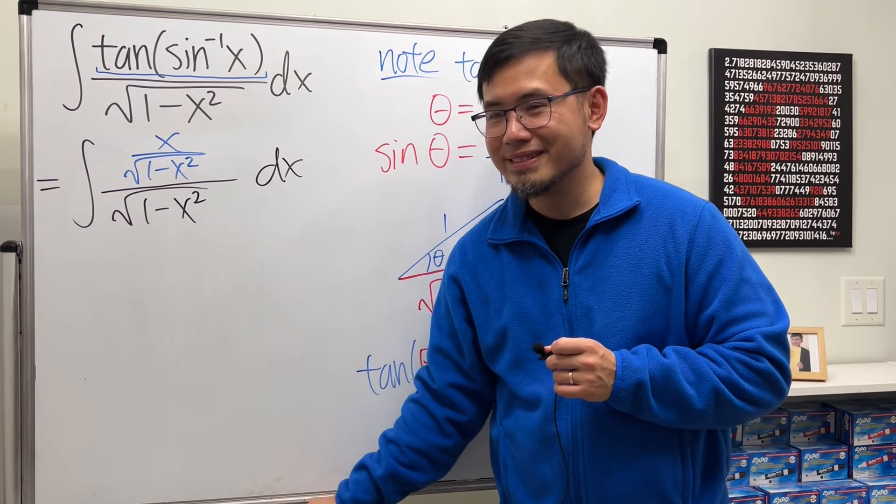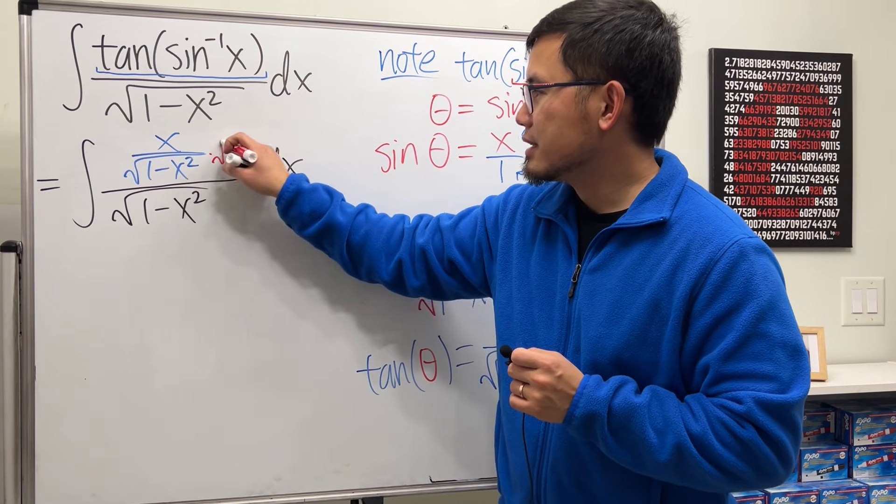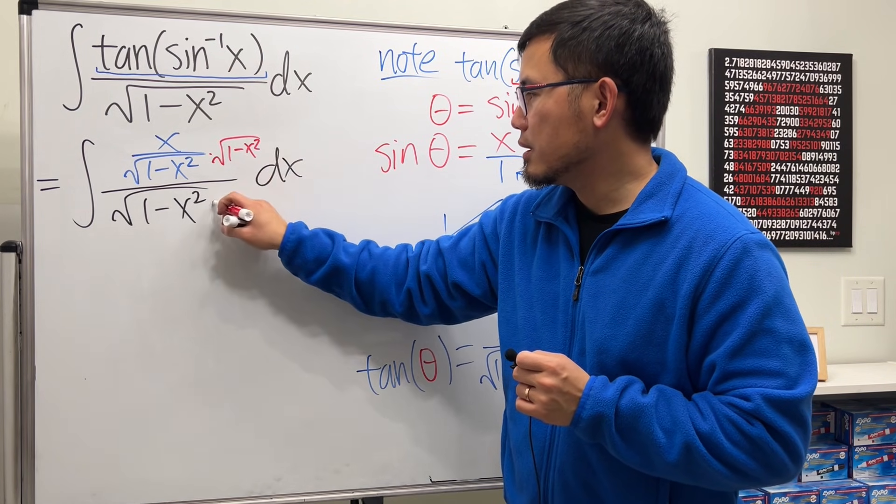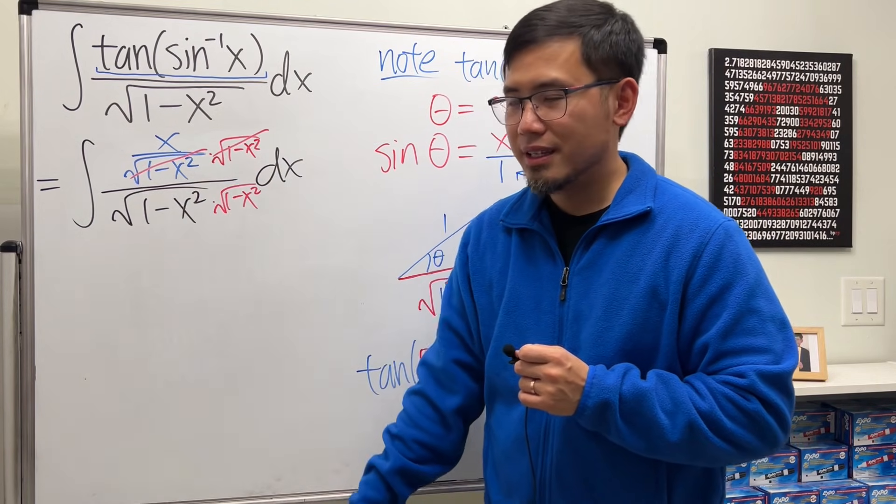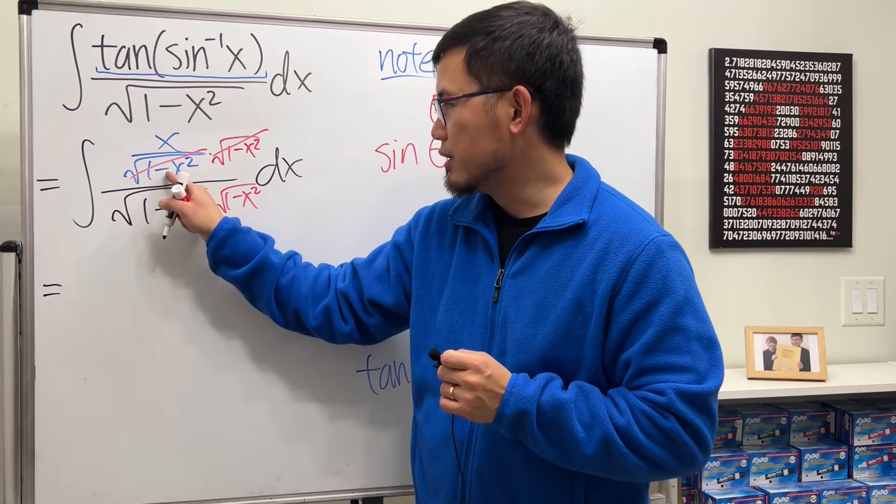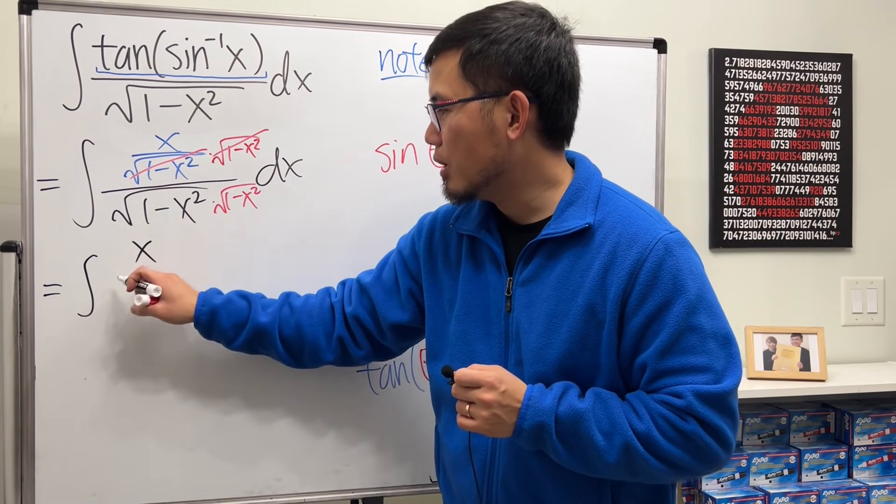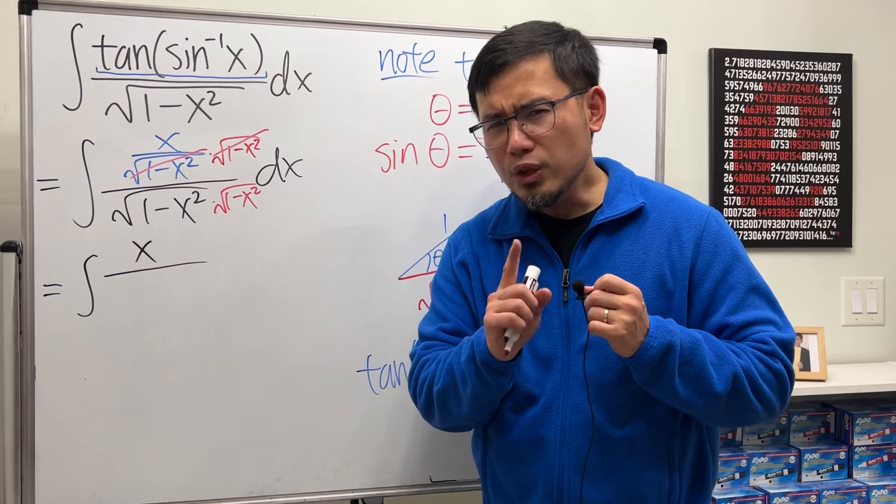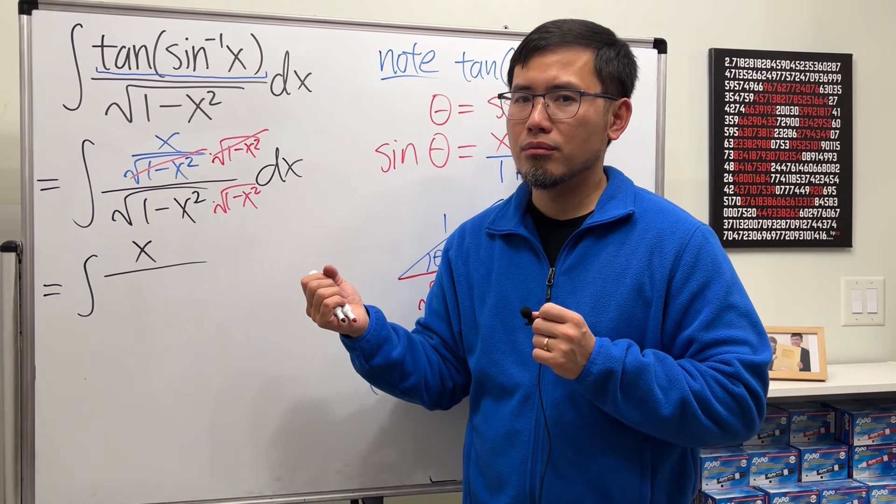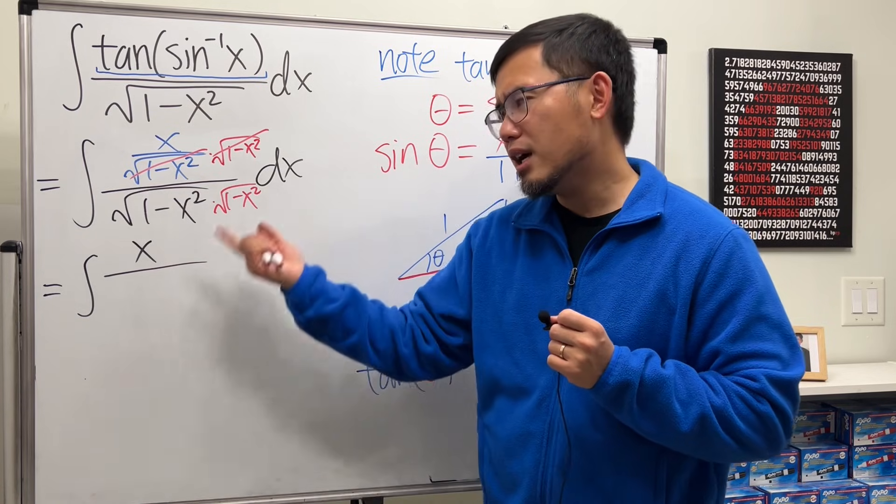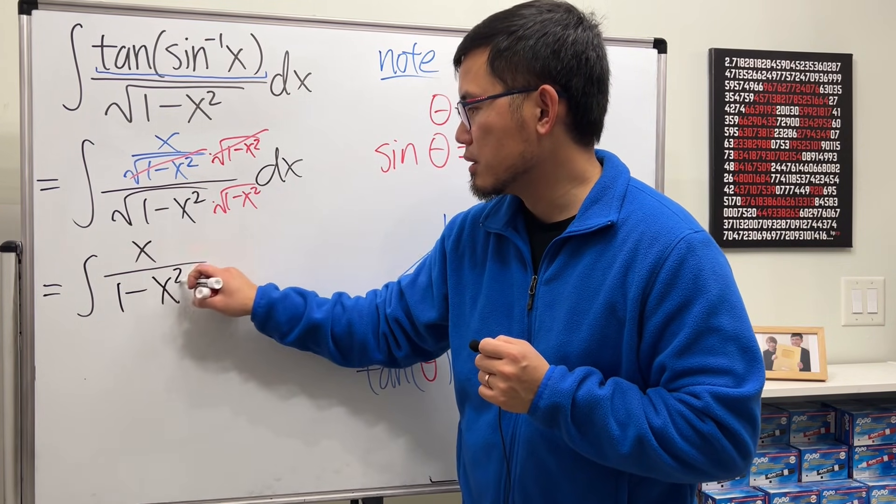Good, huh? Now let's clean this up a little bit. Multiply the top and bottom by square root of 1 minus x squared, because this way you can see this and that cancel. You pretty much just bring this down and multiply with that. And then you are looking at the integral of x on the top over what do we get when we have square root of this times the square root of the same thing? Just inside, right? Yeah, so we just look at the integral of x over 1 minus x squared dx.